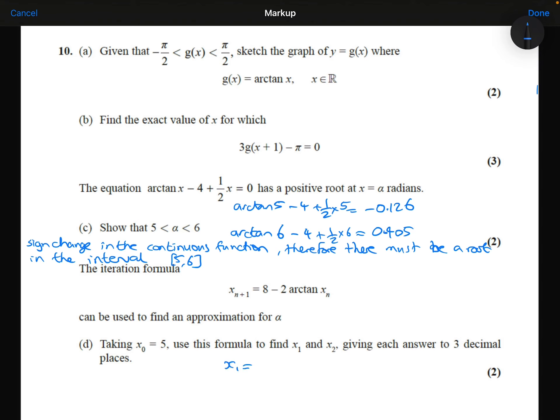So to find x1, I'm going to substitute 5 here. So I would type into my calculator, 8 minus 2 times tan inverse of 5, which gives me 5.253 to three decimal places.